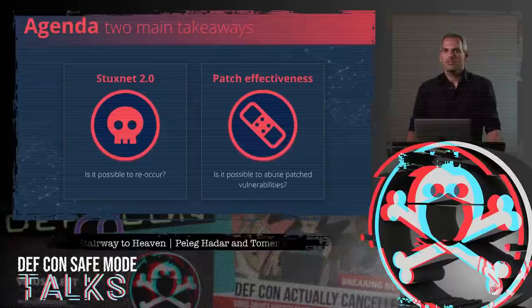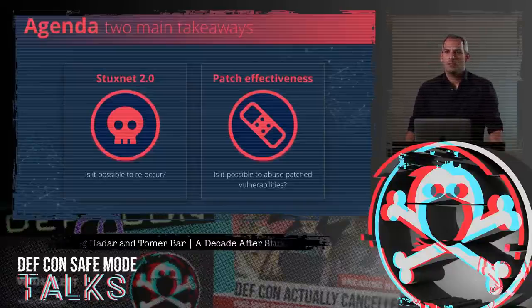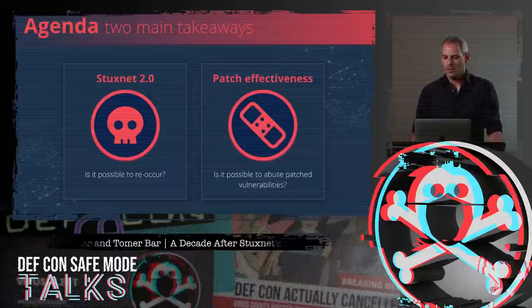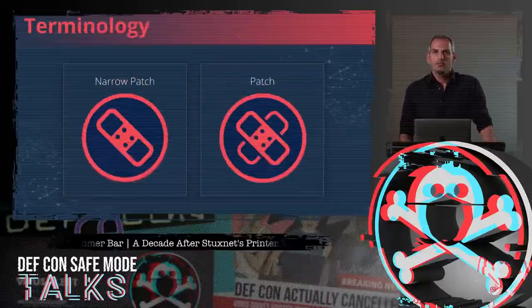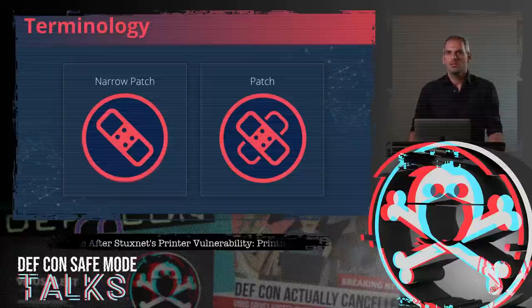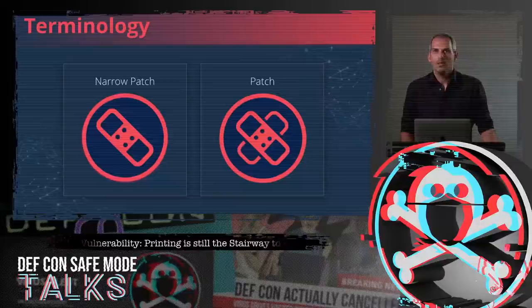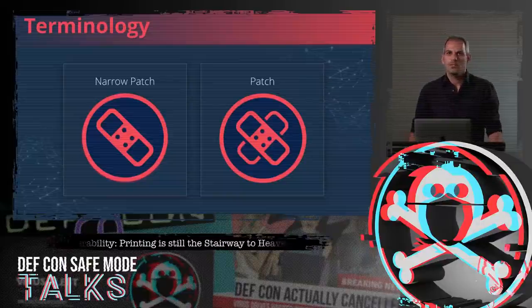We will be focused on answering two fundamental questions. Is it possible to build equivalent propagation capabilities as Stuxnet? Second: if I fully patch my entire Windows operating system, am I safe? We will use two symbols during our presentation. A narrow patch means the patch logic is very specific and it was possible to re-exploit it. A regular patch means it solves the problem and had not been bypassed until now, as far as we know.